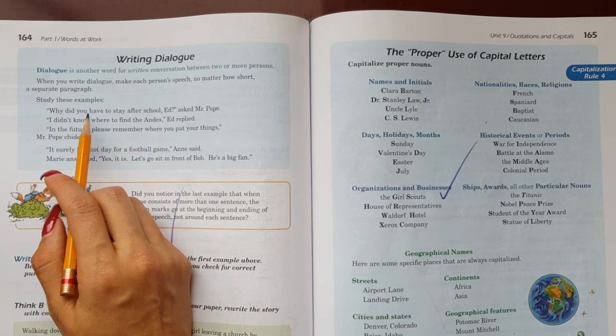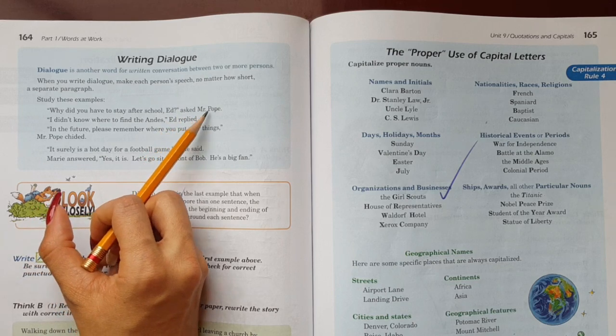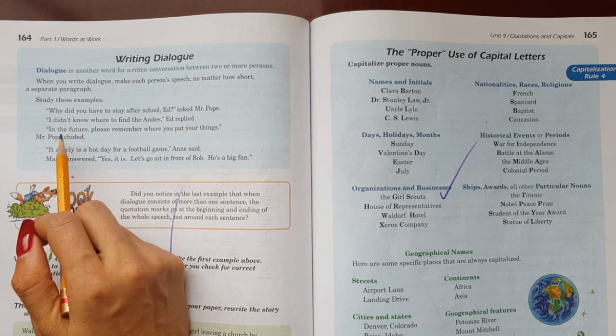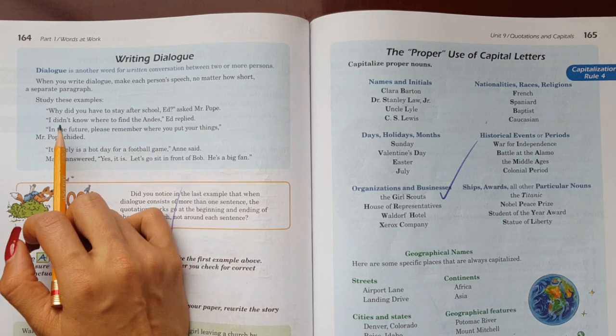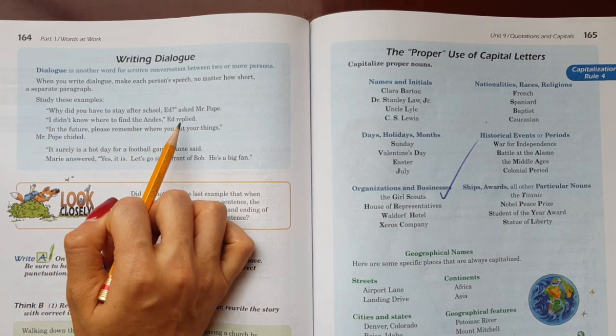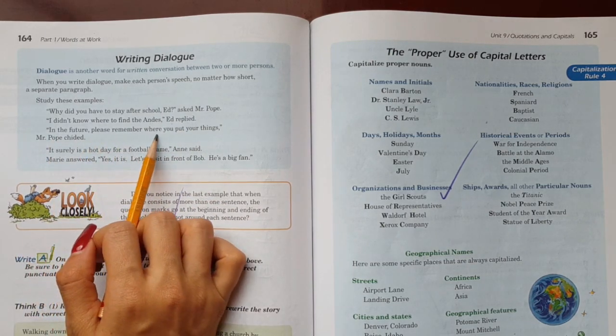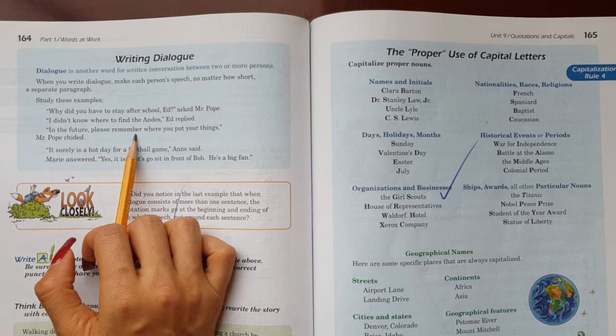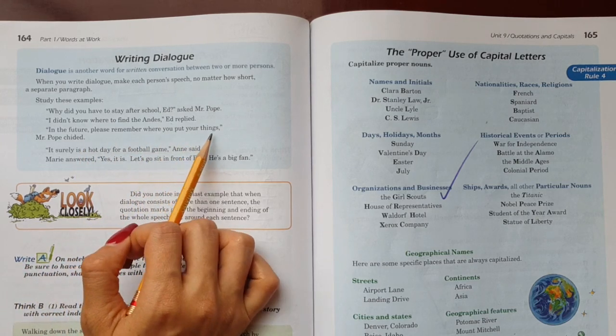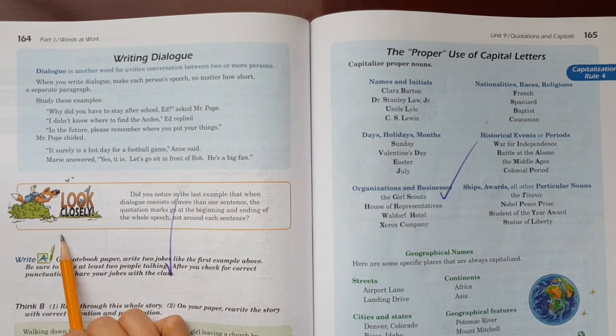Why did you have to stay after school, Ed, asked Mr. Pope. Then it says I didn't know where to find the Andes. I didn't know where to find the Andes, Ed responded. In the future, please remember where you put your things. In the future, please remember where you put your things, Mr. Pope answered him.